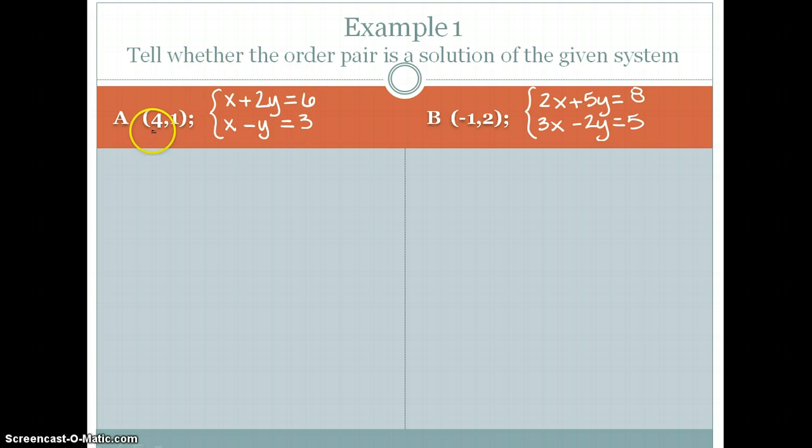And so for this example, it's telling you to verify whether (4, 1) is a solution to this system. In order to verify, you simply need to plug the point into both equations. As long as the point exists in both equations, it is a solution. The point, specifically, is actually the point of intersection.